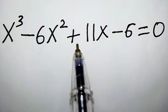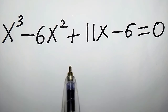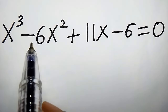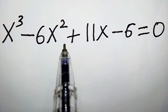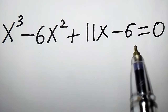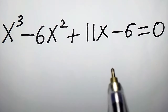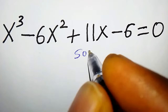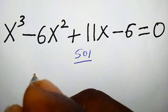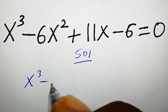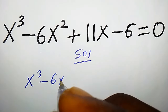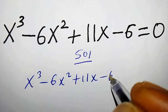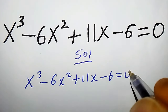The best way to solve this kind of problem is to use the factorization method. x³ - 6x² + 11x - 6 = 0. How do we find the value of x? Solution: we have x³ - 6x² + 11x - 6 = 0.